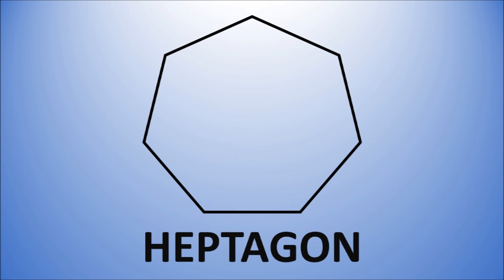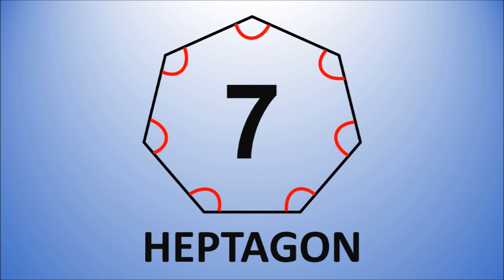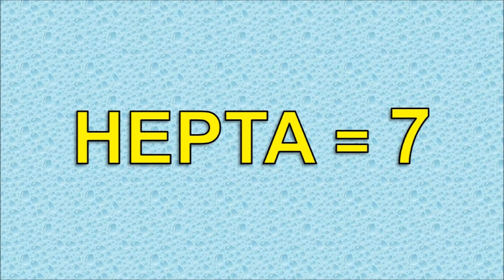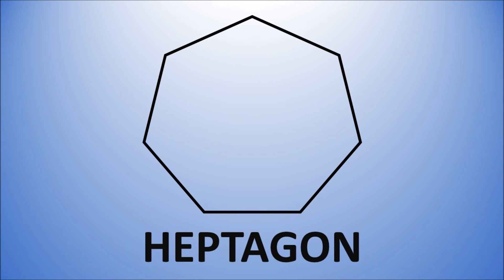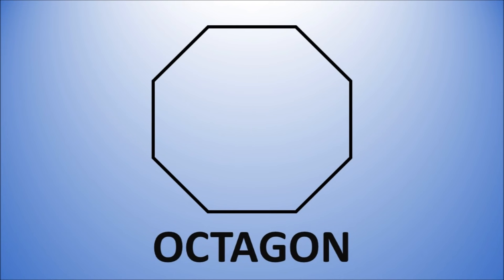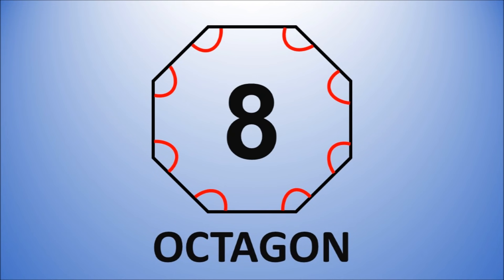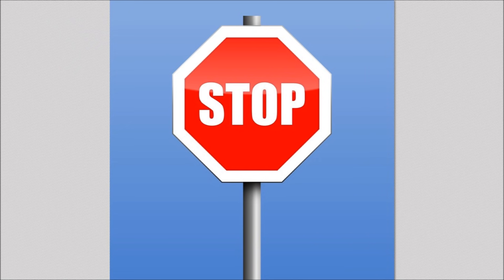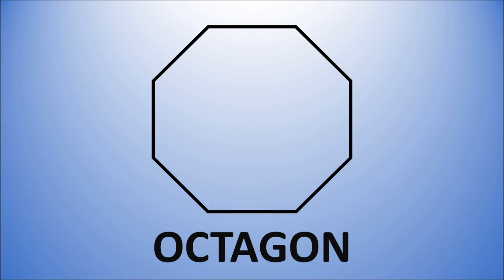A heptagon has seven sides and seven angles made from straight lines. The word heptah means seven. An octagon has eight sides and eight angles made from straight lines. A good example is a stop sign.